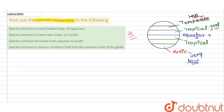Now let's evaluate the options. Option one says species richness is more below the Tropic of Capricorn. Below the Tropic of Capricorn is near the temperate region, where species richness is very low, not high. So this statement is wrong.